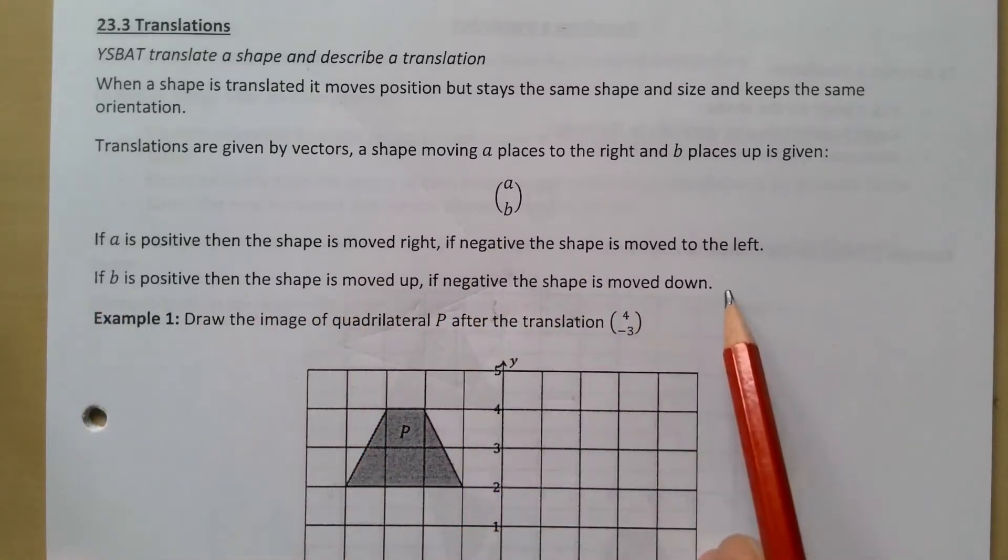Draw the image of the quadrilateral P after translation (4, -3). So that's 4 means it's 4 that way, the same way as the axes go 4 this way.